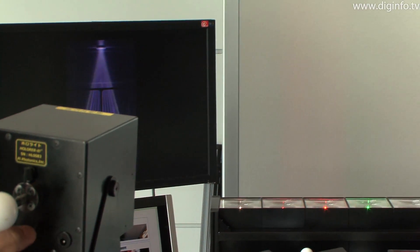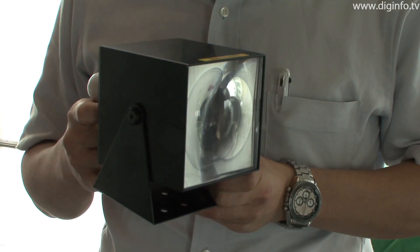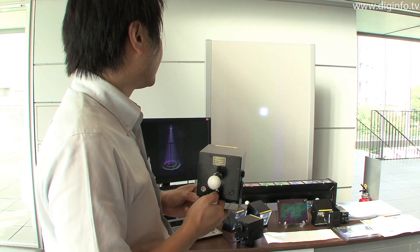The HoloLight, developed by Pi Photonics, is an LED light that can emit simulated parallel light on a par with sunlight from a compact cubic housing.